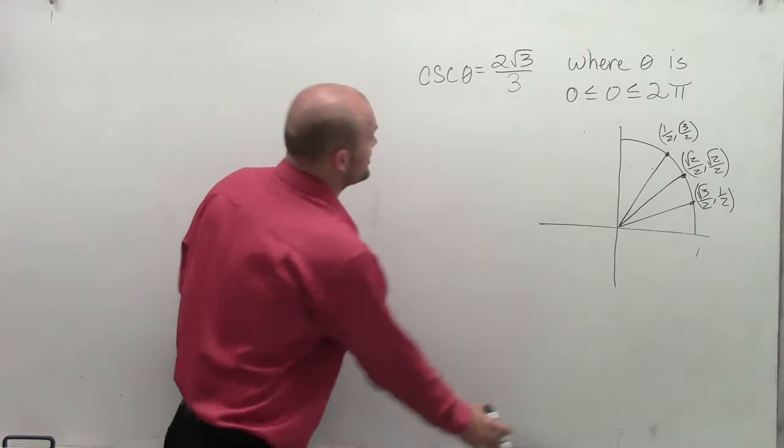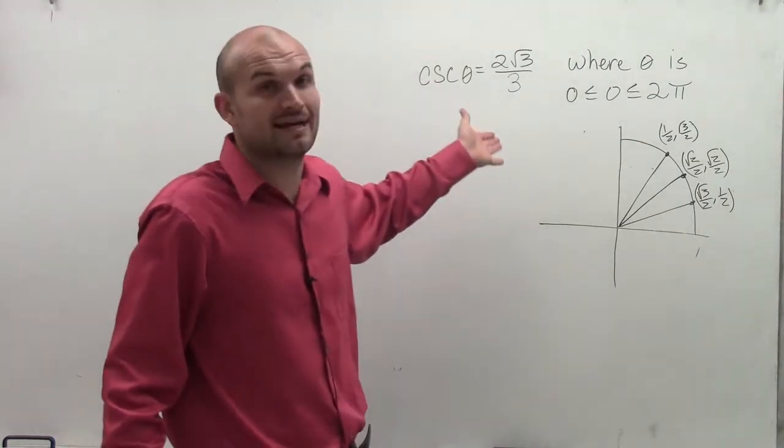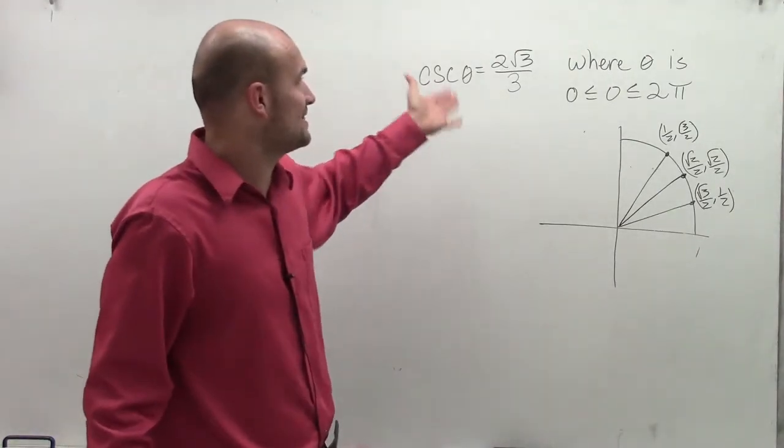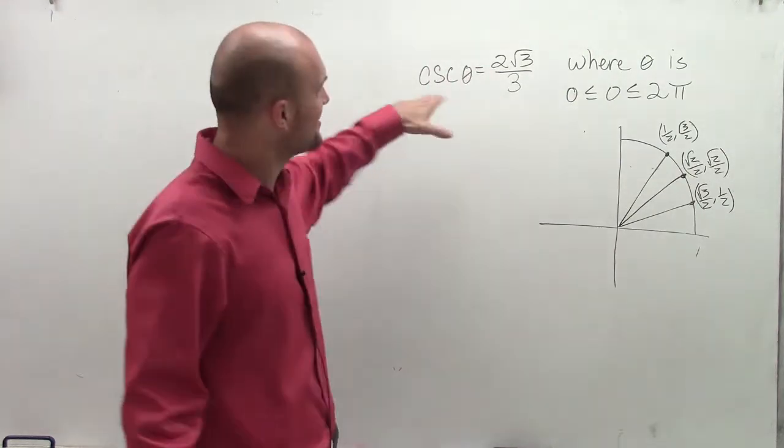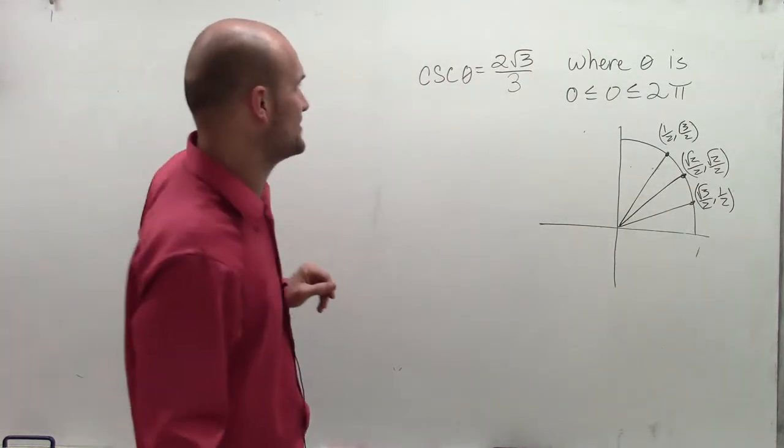Welcome. So what I want to do is show you how to evaluate for theta when cosecant of theta equals 2 times radical 3 divided by 3.